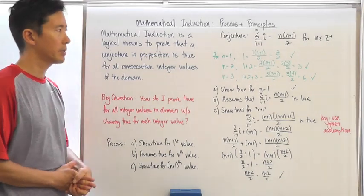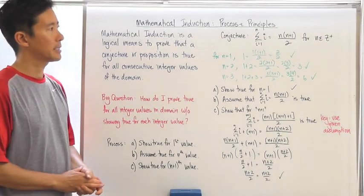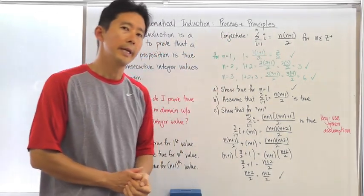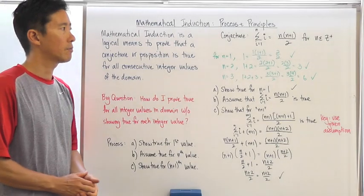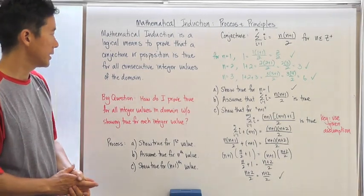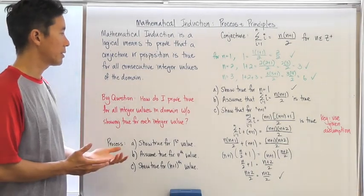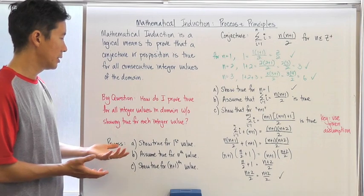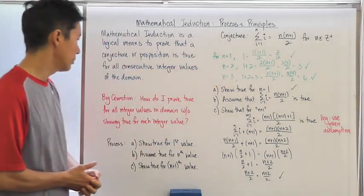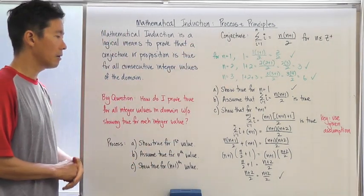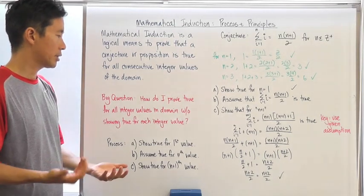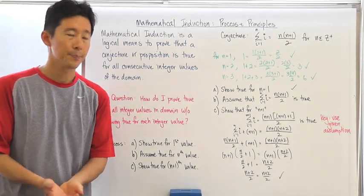What we want to do now is say, let's suppose that we didn't know that it was true. Is there a way that we can go ahead and prove it to be so? This is the big question: how do I prove this conjecture true for all integer values in the domain without showing it true for each individual integer value?